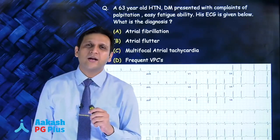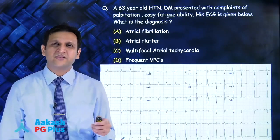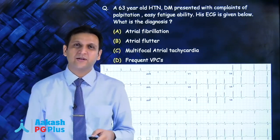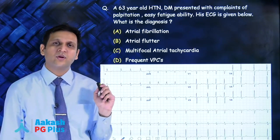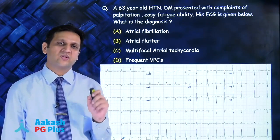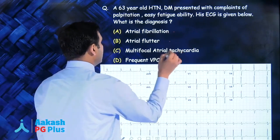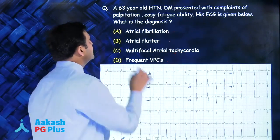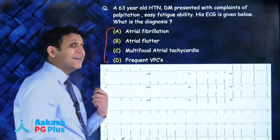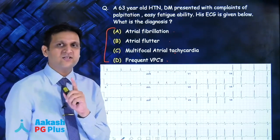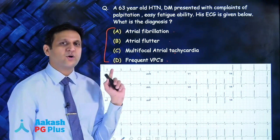A 63 year old hypertensive diabetic presents to the emergency with complaints of palpitation and easy fatigability. His ECG is given below. What is the diagnosis? These four options - atrial fibrillation, atrial flutter, multifocal atrial tachycardia, and frequent VPCs - are all causes of irregularly irregular pulse, and you will always have one image in your exam from one of these topics.